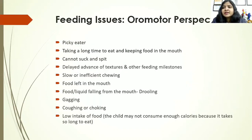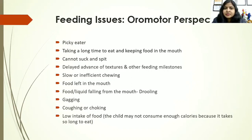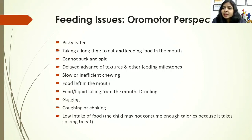What do we expect to see if the child has feeding issues? The child might be a picky eater. He might take too long to eat or keep food in the mouth. The child cannot suck or spit. There is delayed advance of textures and other feeding milestones. There is inefficient chewing. Food will be left in the mouth if you ask the child to open the mouth after some time. There might be drooling, gagging, coughing, or choking, and all of these factors lead to low intake of food and compromised nutrition.